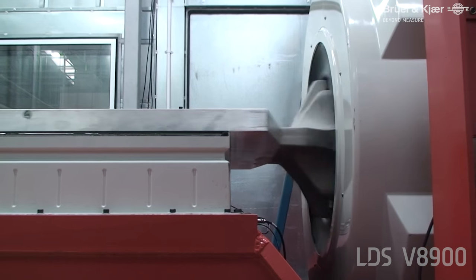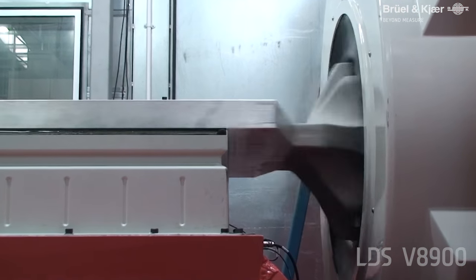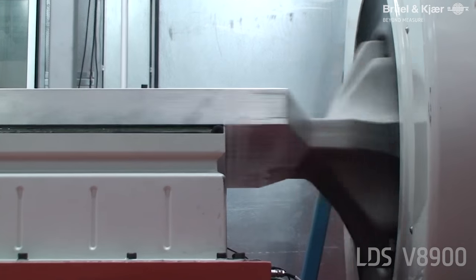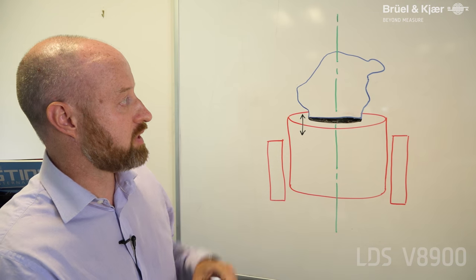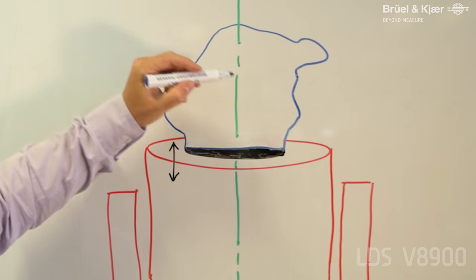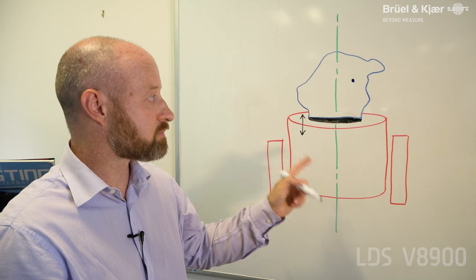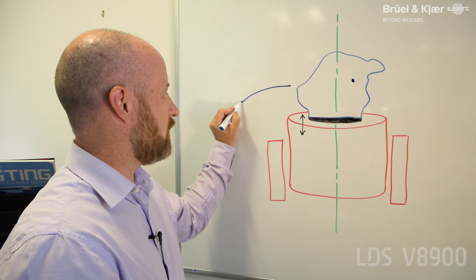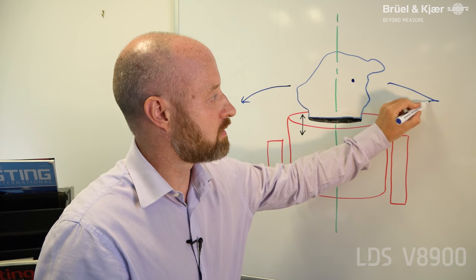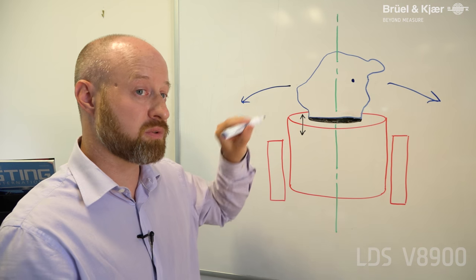The V8900 has a 3 kilonewton-meter overturning moment. The reason for that, as you can see from this payload here, the center of gravity of the payload is not always over the center of the shaker. As a result, overturning moments can arise from left to right and also in the other axis.